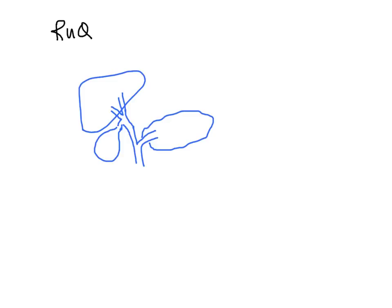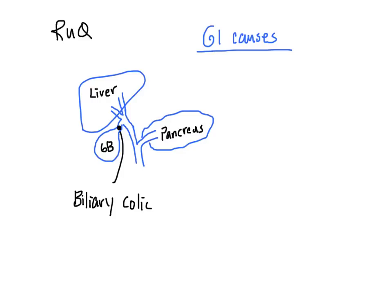First, the right upper quadrant. In the right upper quadrant, we have the liver, gallbladder, and the pancreas slightly off to the midline. When we think about GI causes, anything that affects the liver, the gallbladder, and the pancreas will give patients right upper quadrant pain. These include gallstones giving rise to biliary colic, inflammation of the gallbladder — also known as cholecystitis — stone in the common bile duct, or inflammation of the pancreas, or pancreatitis.